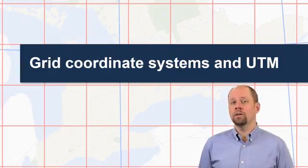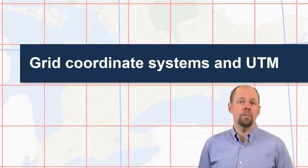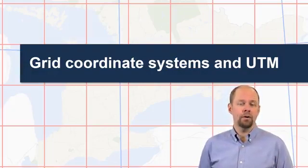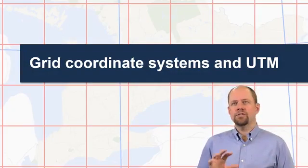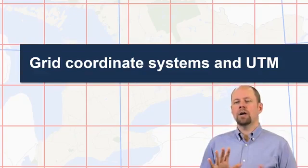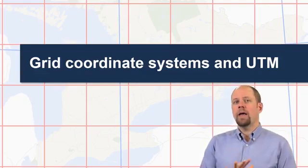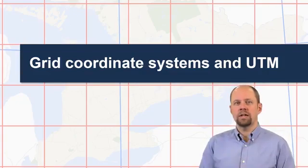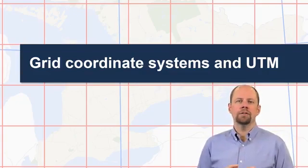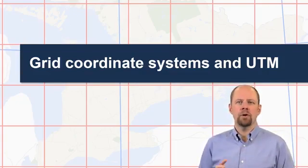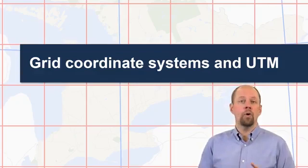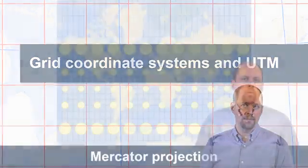In this section, I want to talk about grid coordinate systems and a popular example of that, which is UTM, which stands for Universal Transverse Mercator. There are two different ideas going on here. We're going to talk about a particular type of coordinate system and a particular type of projection and how those two things work together. UTM is really useful and very popular, so I want to make sure that you're aware of it and what it does and why you may want to use it.